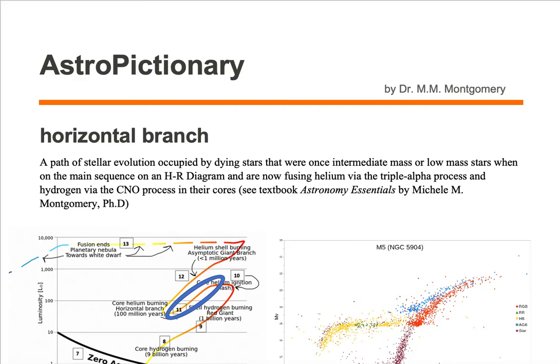The horizontal branch is a path of stellar evolution occupied by dying stars that were once intermediate mass or low mass stars when on the main sequence of an H-R diagram and are now fusing helium via the triple alpha process and hydrogen by the CNO process in their cores.